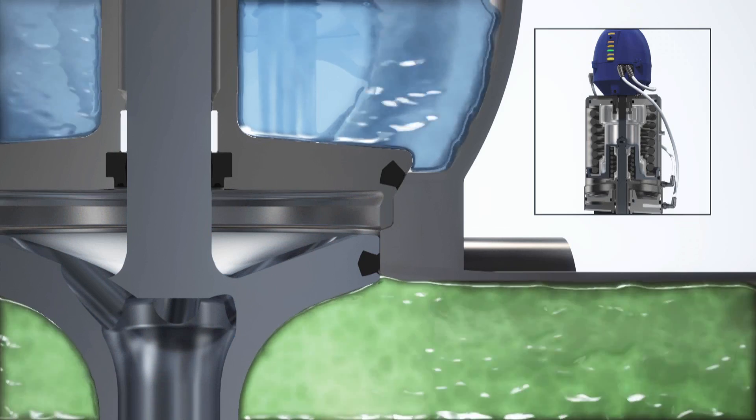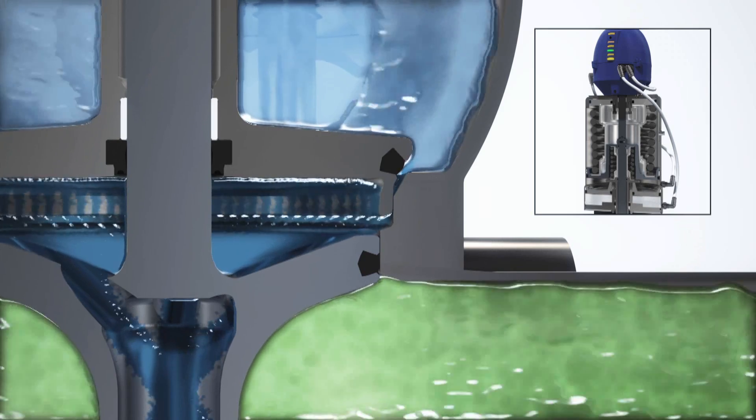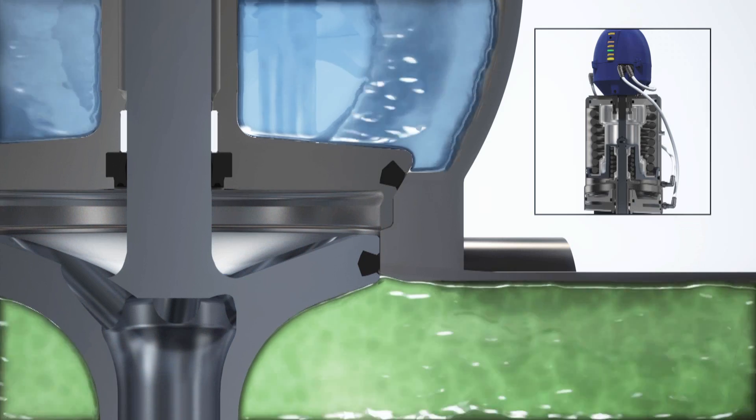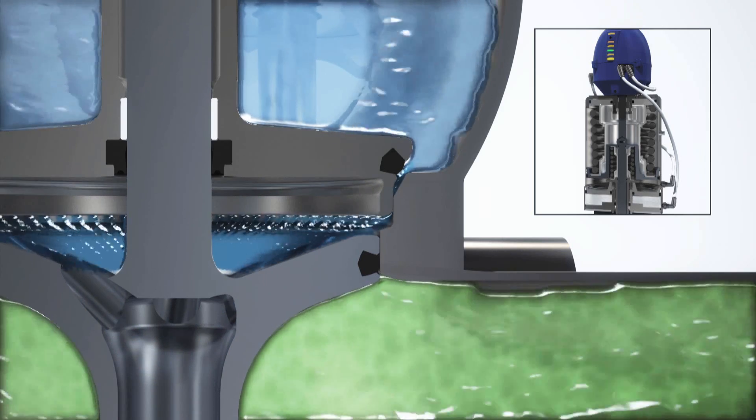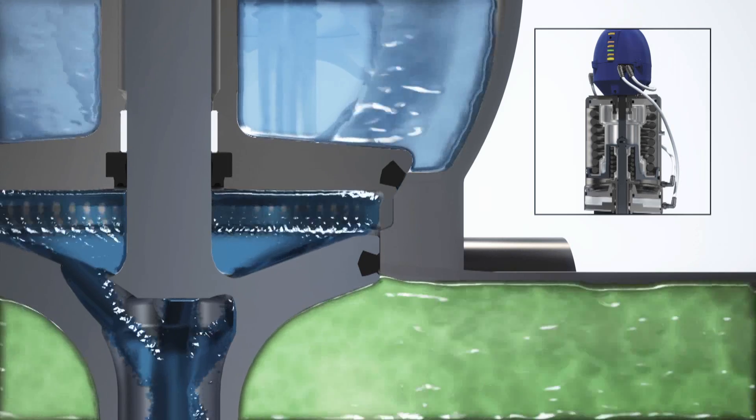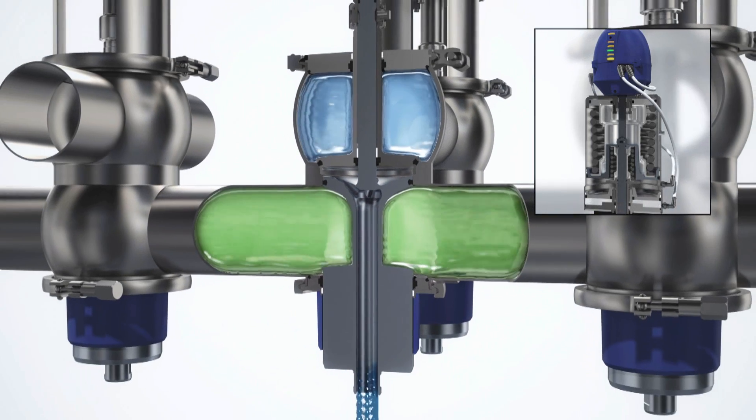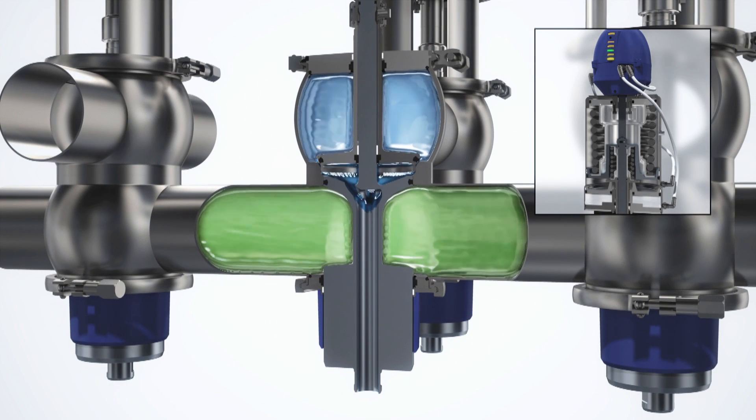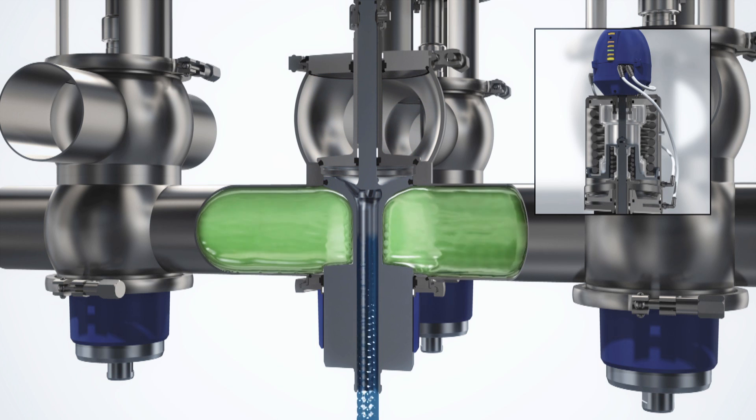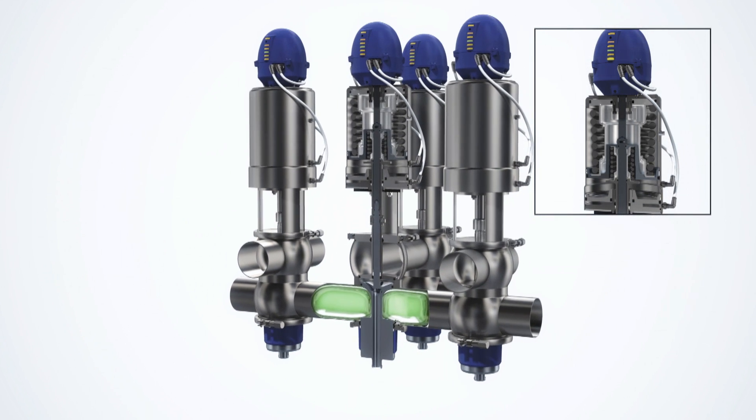This speeds up the cleaning process by creating high turbulence and scrubbing effects, making very efficient use of a minimal amount of CIP fluid. It also reduces pressure of the CIP fluid, eliminating the risk of pressure build-up in the leakage chamber and ensuring risk-free cleaning.